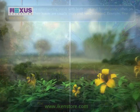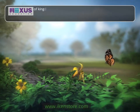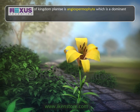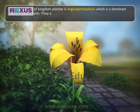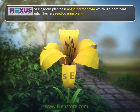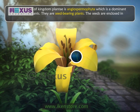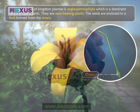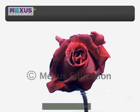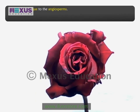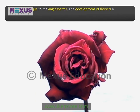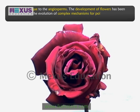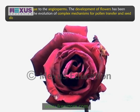The last phylum of Kingdom Plantae is angiospermophyta, which is the dominant group of land plants. They are seed bearing plants. The seeds are enclosed in a fruit formed from the ovary. Flowers are unique to the angiosperms. The development of flowers has been associated with the evolution of complex mechanisms for pollen transfer and seed dispersal.